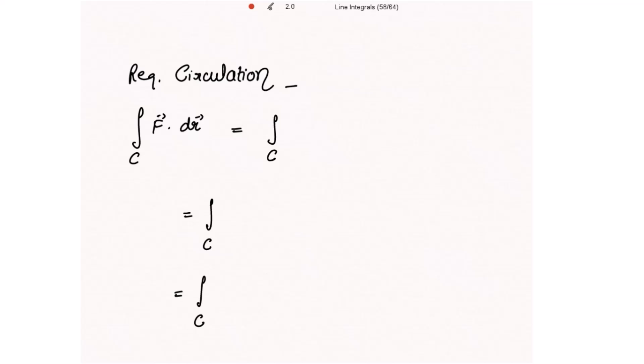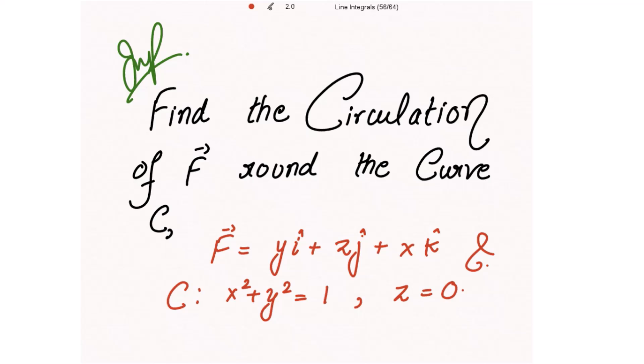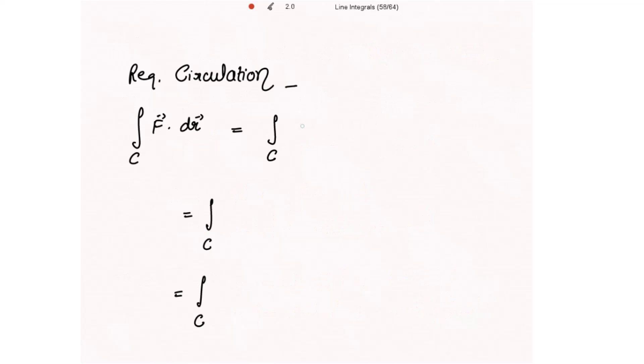What is the required circulation? Circulation means finding the line integral of the dot product of f vector with dr vector. The f vector given to us is yî + zĵ + xk̂.